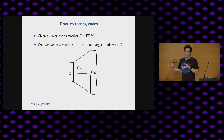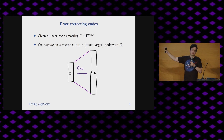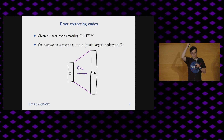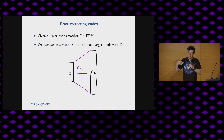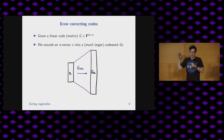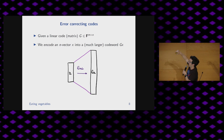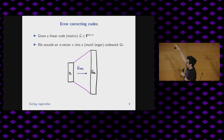What is an error-correcting code? A linear code is just a matrix with M rows and N columns. We encode a vector X into a much larger code word G of X. Here's a drawing of an encoding: you take an X and then you blow it up to some larger codeword G of X. The Reed-Solomon code is the most common encoding in ZK: X is the coefficients of a polynomial of degree N minus one, and G(X)(R) says evaluate that polynomial at a point R.